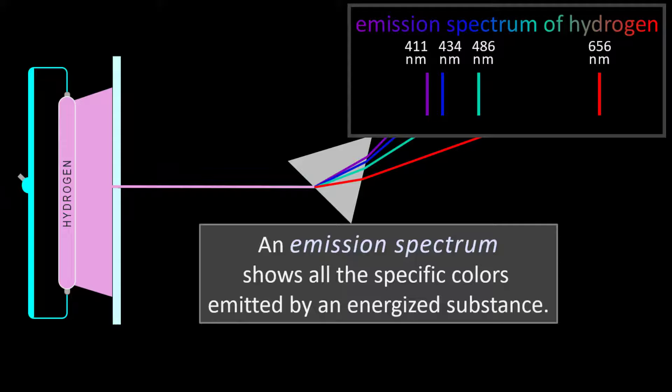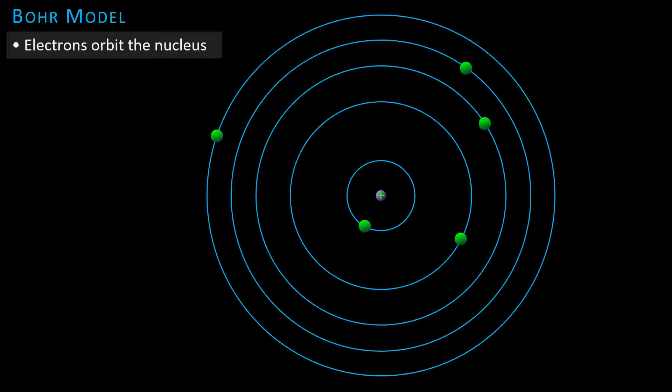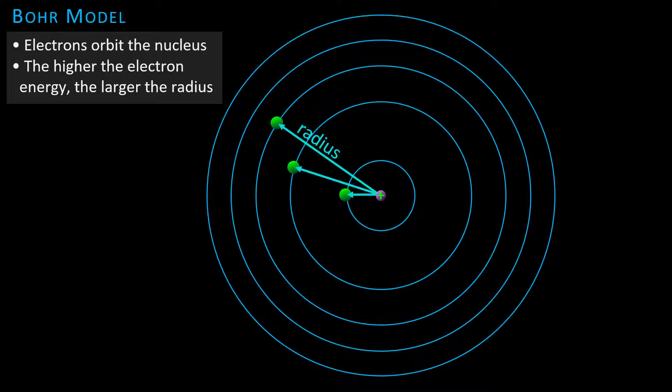In 1913, using the atom's vast empty space provided by Rutherford's nuclear model of the atom, Niels Bohr created a model of the atom that explained the behavior of electrons in the atom and explained the existence of the emitted colors. In Bohr's atomic model, the electrons orbit the nucleus. The electrons can only have specific discrete energies, and the higher their allowed energy, the larger the radius of their orbit.